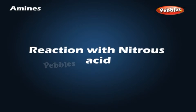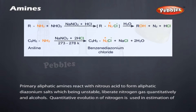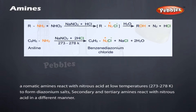Reactions with Nitrous Acid: Primary aliphatic amines react with nitrous acid to form aliphatic diazonium salts, which being unstable, liberate nitrogen gas quantitatively and alcohols. Quantitative evolution of nitrogen is used in estimation of amino acids and proteins. Aromatic amines react with nitrous acid at low temperatures to form diazonium salts. Secondary and tertiary amines react with nitrous acid in a different manner.